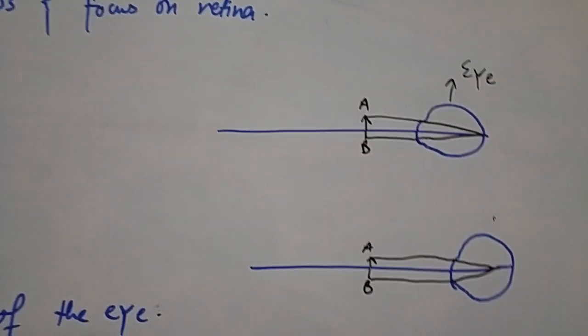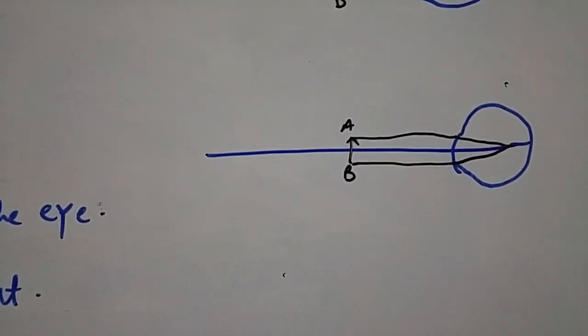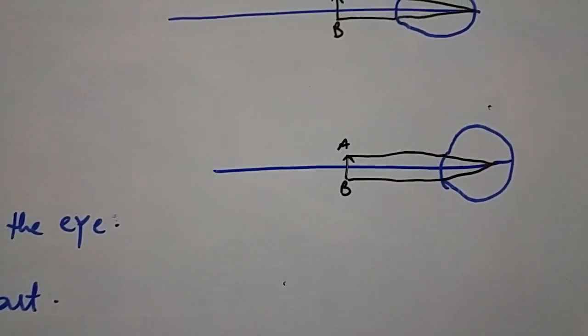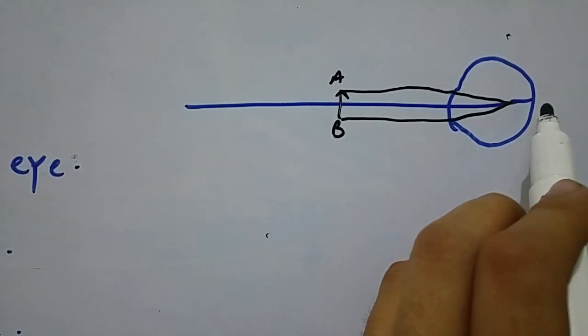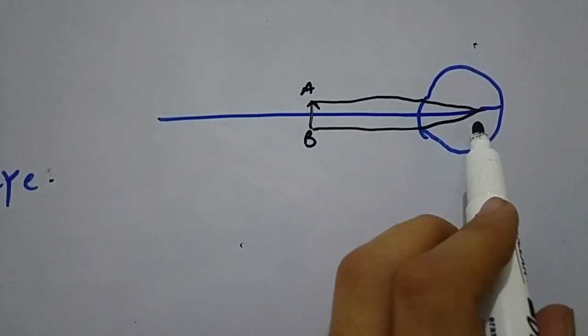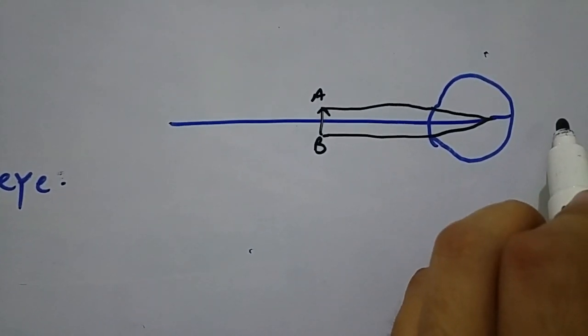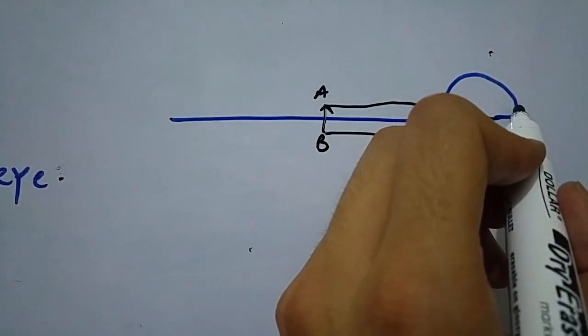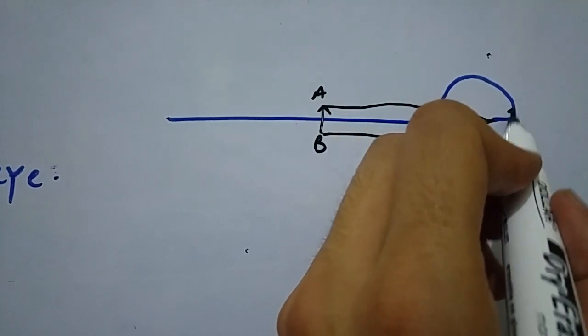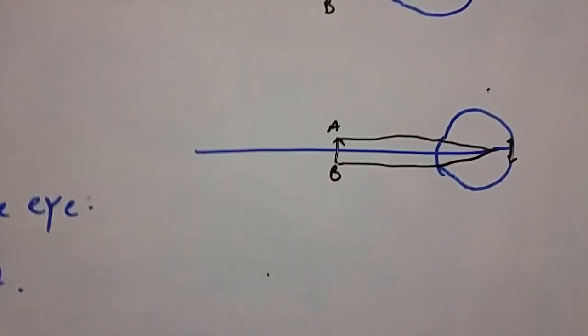But in the case of refractive error, for example myopia or hypermetropia, what happens is that rays of light coming from the object are not focused on the retina but may be in front of the retina in case of myopia or behind the retina in case of hypermetropia. As a result, the image formed on the retina is not as clear as compared to the patient who is normal.